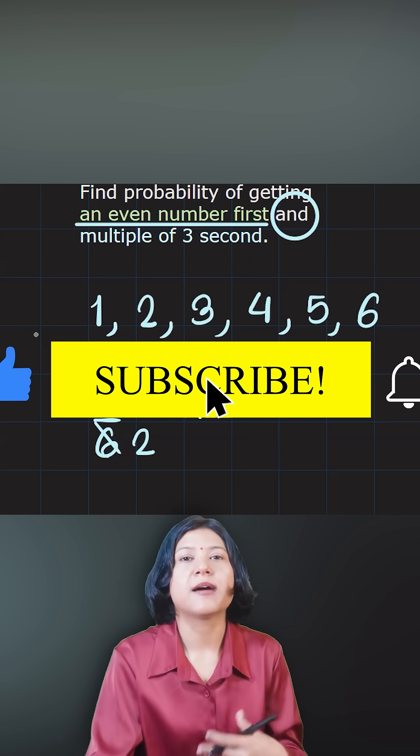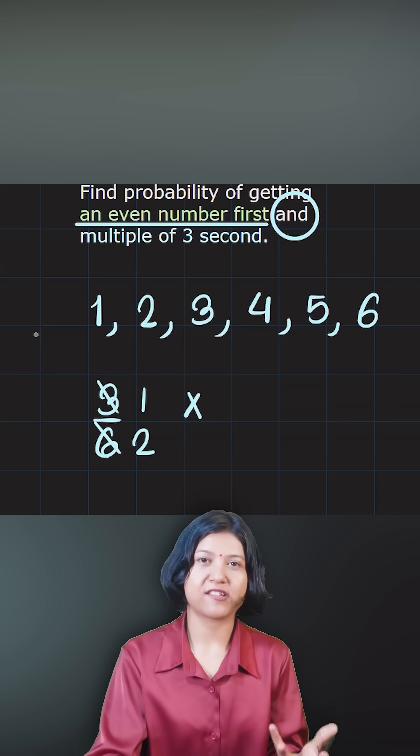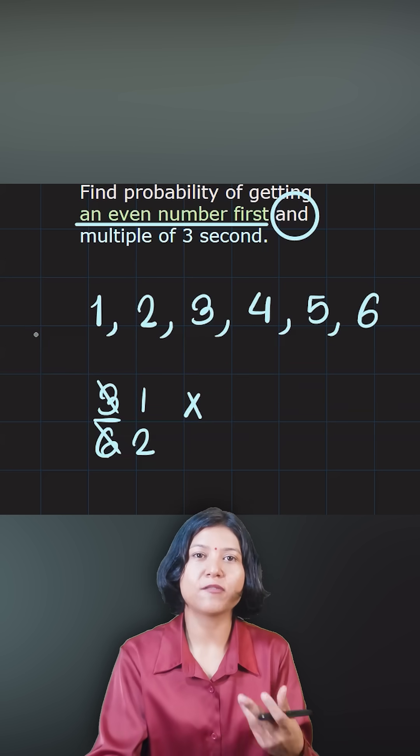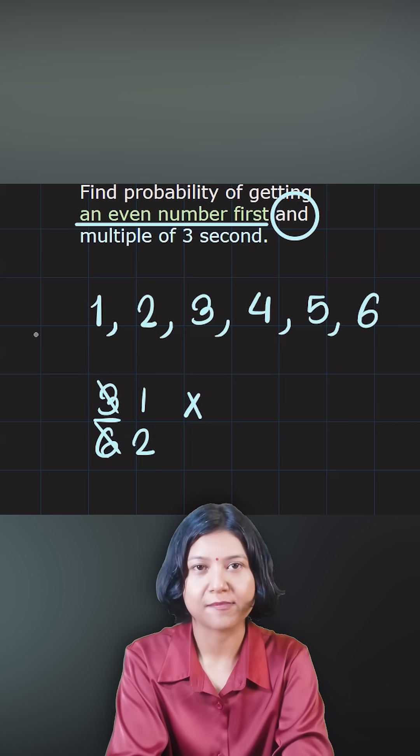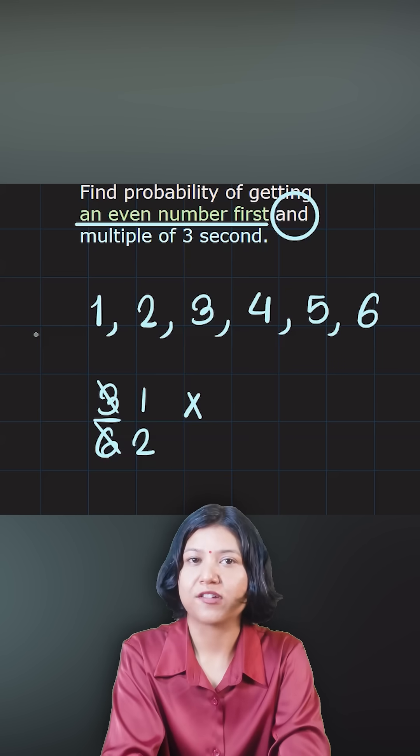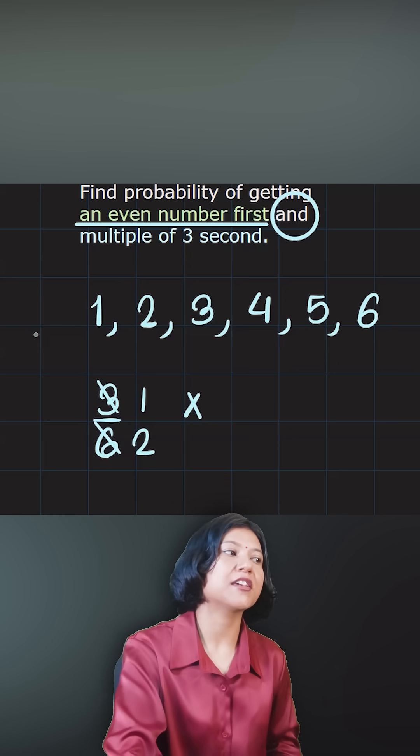When it becomes conditional the number of possibilities now reduces. Just like for example if I ask you to get full marks in both the test, the probability of getting full marks in both the test is much lesser as compared to getting the full marks in just one test. Right? So the same thing here.